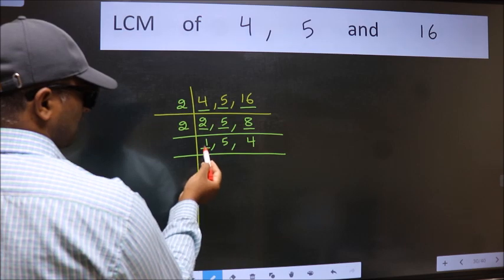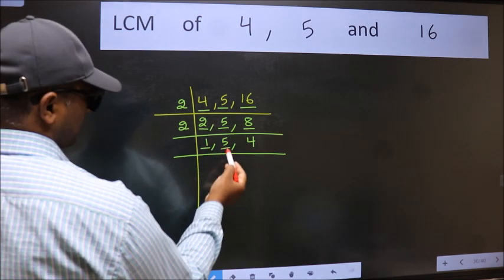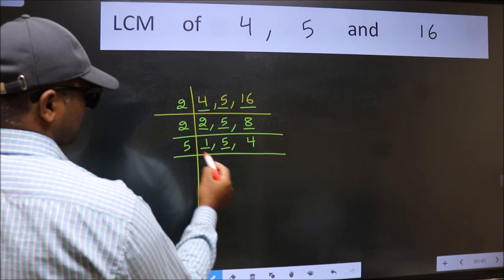Now we got 1 here so focus on the next number 5. 5 is a prime number so 5 times 1 is 5.